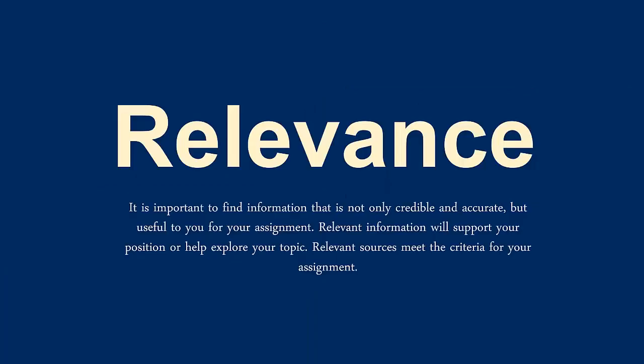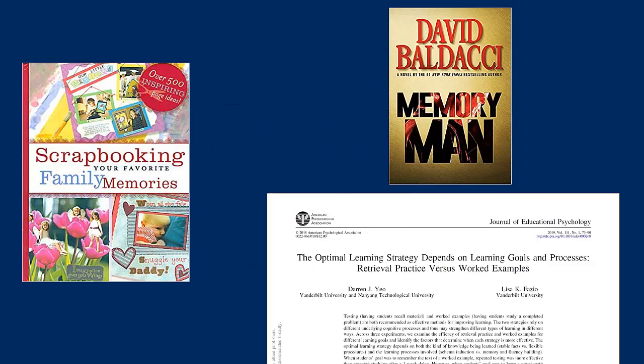Relevance. Relevance is checking that the information is not only credible and accurate but also on-topic, appropriate, and useful for your information need. Check your professor's assignment instructions carefully. Does your professor specify which kinds of sources you can use for the assignment? Consider the intended audience for the source. All three of these sources came up in searches for memory, but only one is on-topic. The library's physical and online sources are all carefully vetted by librarians. We have selected high-quality sources that support the curriculum at IRSC. However, you still need to evaluate these sources for relevance to make sure they fit your information need, relate to your topic, and meet the requirements for your assignments.